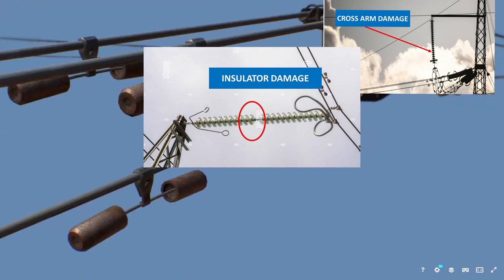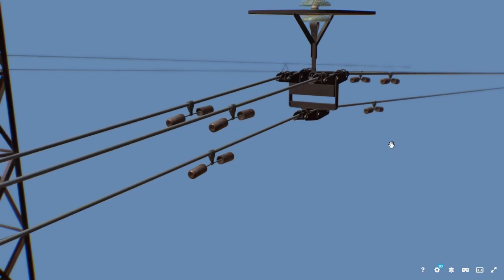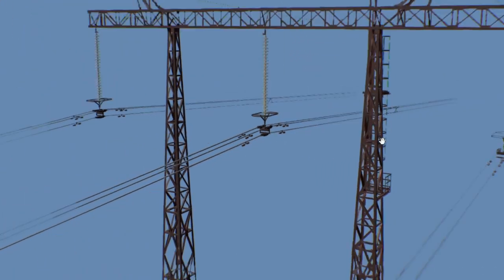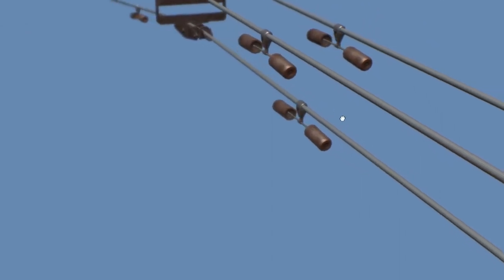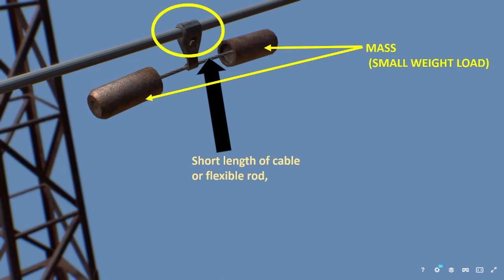To take care of this type of situation, we use this vibration damper, also known as Stockbridge damper. As you see, this dumbbell-shaped device consists of two masses and is connected with a short length of cable or flexible rod, which is clamped at the main conductor.